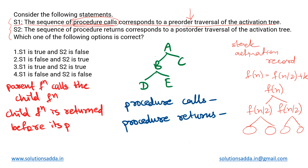In the same way, we have statement S2, which is talking about procedure returns. So while S1 was talking about the calls, S2 is talking about the returns — meaning the order in which we return from those function calls corresponds to a post-order traversal of the activation tree. Now let us verify which of these statements is or are true.